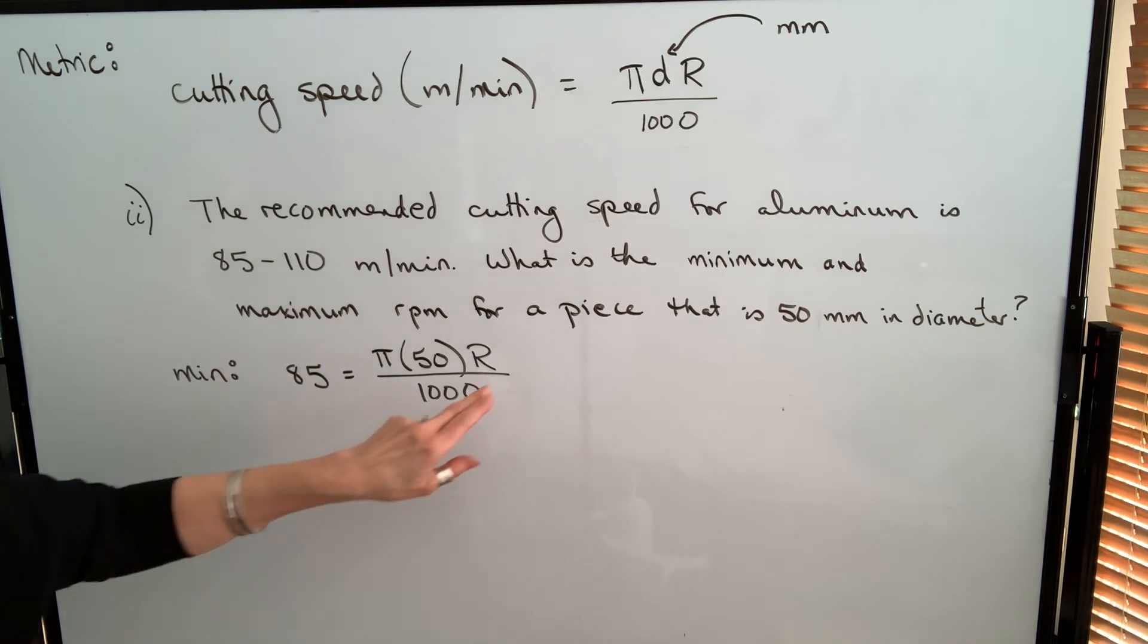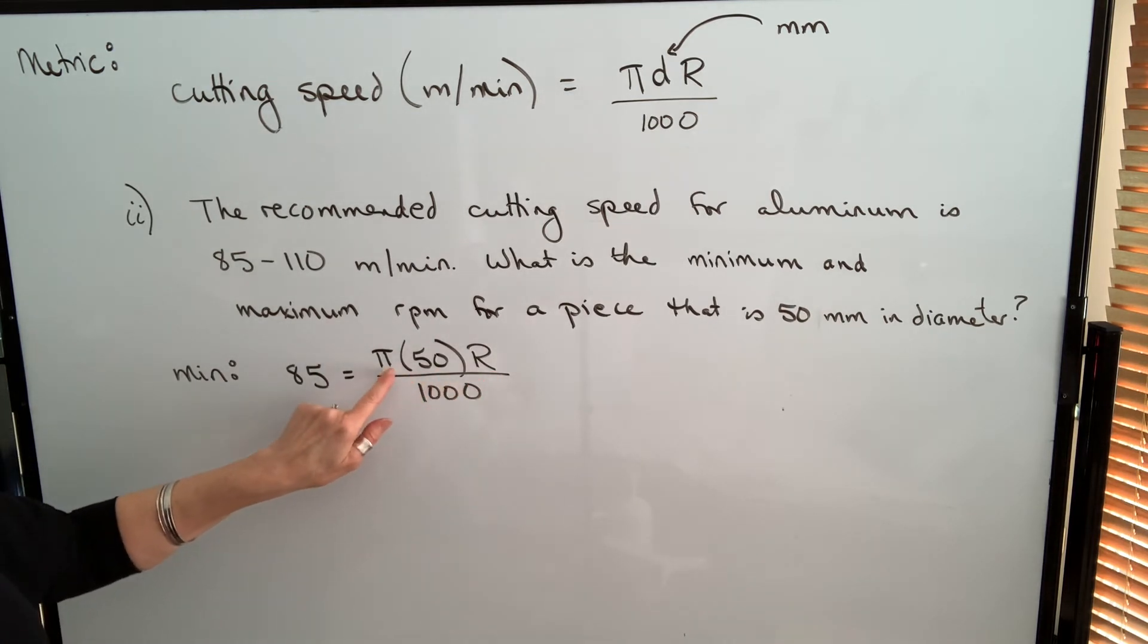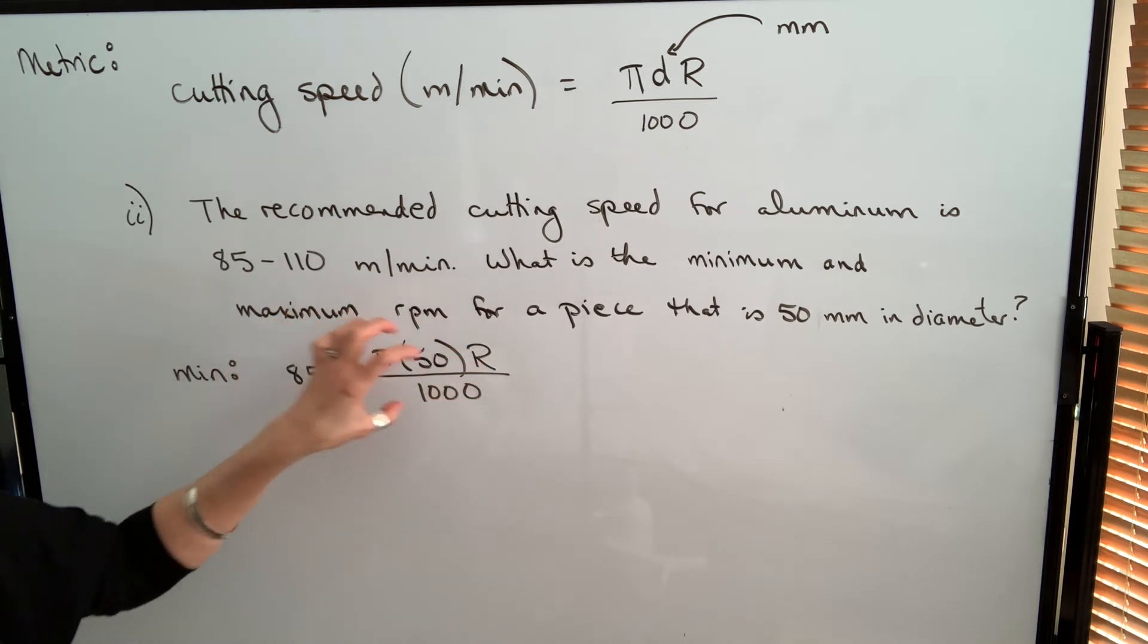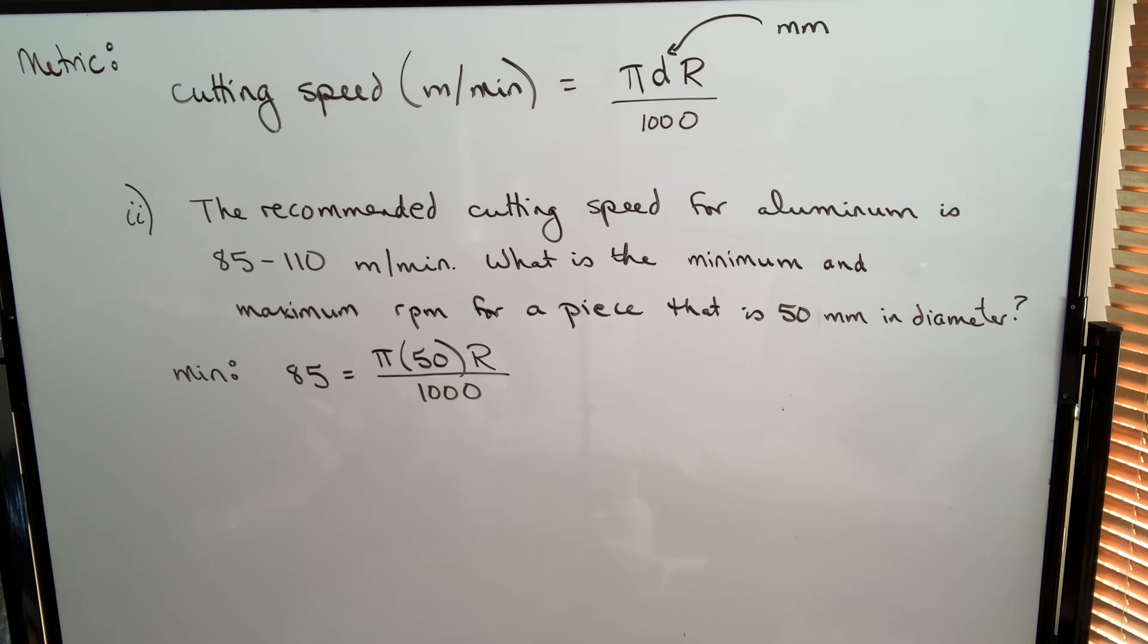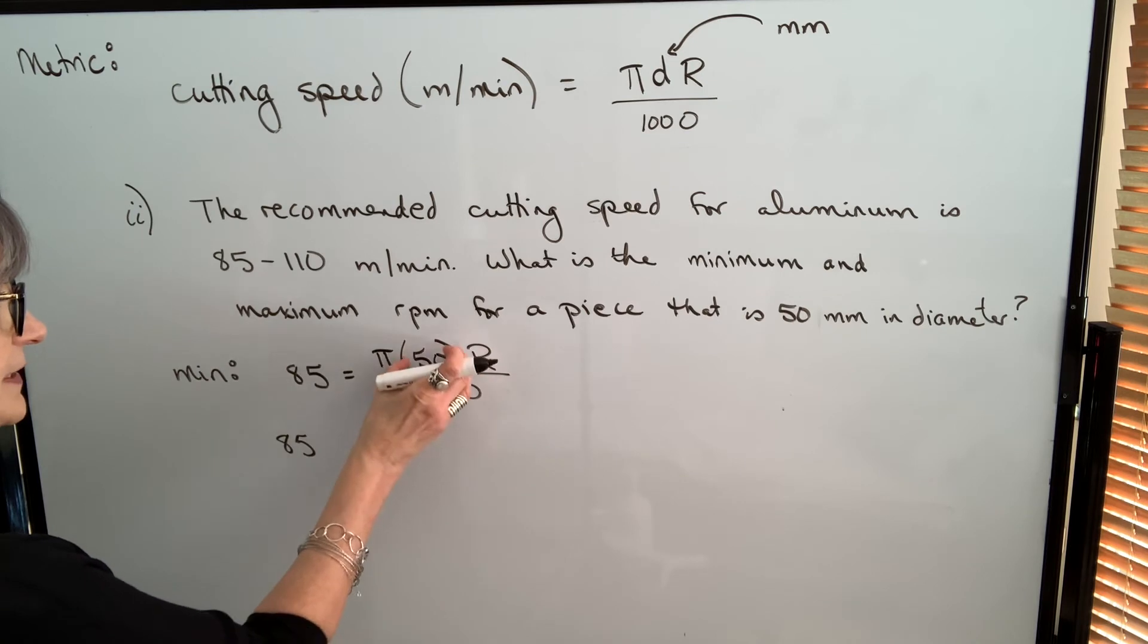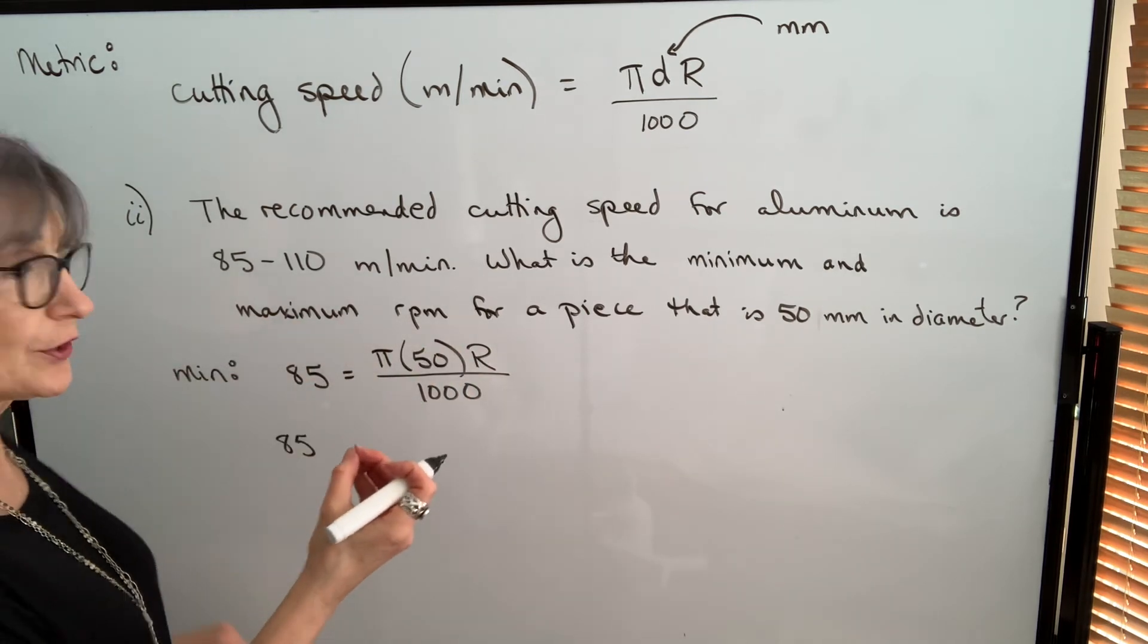Now there's two options for solving for r. I could take π, multiply by 50, divide by 1,000, get one number here, and then divide both sides by that number to isolate r. Or I can move each of these numbers over by performing the inverse operation.